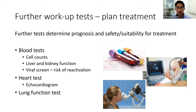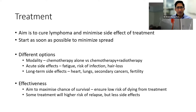Now we're at the treatment stage. Our goal for Hodgkin lymphoma is to cure it — make it go away and not come back. On the other hand, we want to make sure treatment doesn't cause too many side effects, either at the time or long-term. This is a disease where we recommend starting treatment as soon as possible. We want to minimise spread — catching it at stage one probably has a better prognosis than letting it grow to stage four.